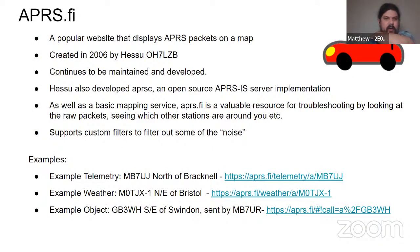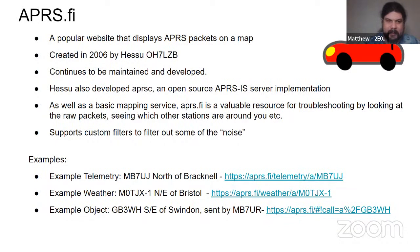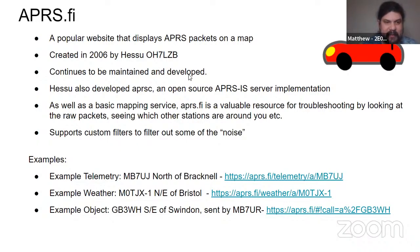Which brings us to APRS.fi. A lot of people have seen APRS.fi — it's kind of a common introduction to amateur radio; if you ever go to a shack or to a meeting, someone will usually load this up. APRS.fi is a popular website that displays APRS packets on a map. It was created in 2006 by HE5U OH7LZB and continues to be maintained and developed. As well as a basic mapping service, it's also a valuable resource for troubleshooting — you can look at raw packets, see who's around you, compare your station to others, and use filters to strip it down to what you want to see.